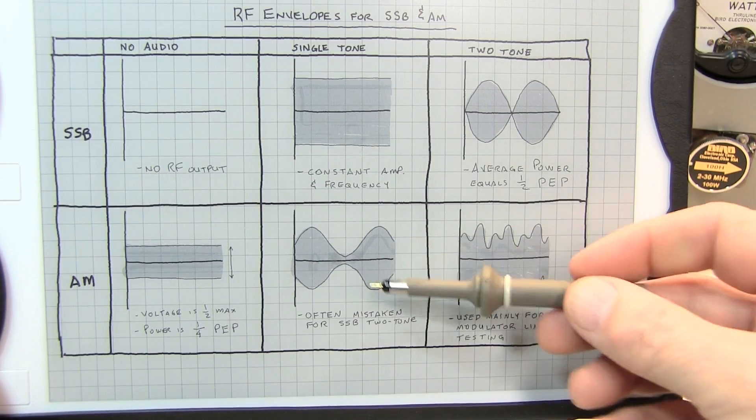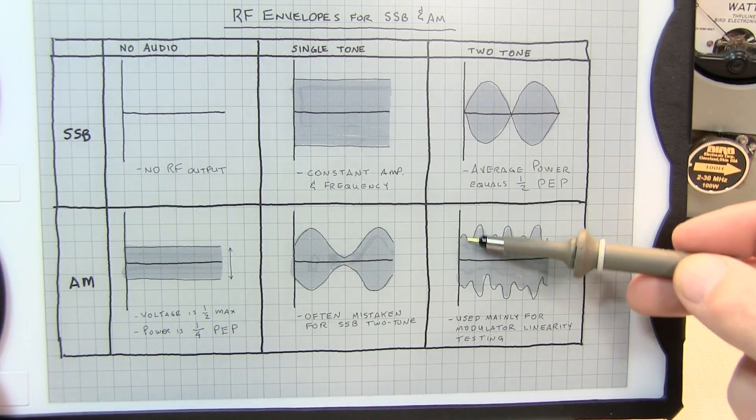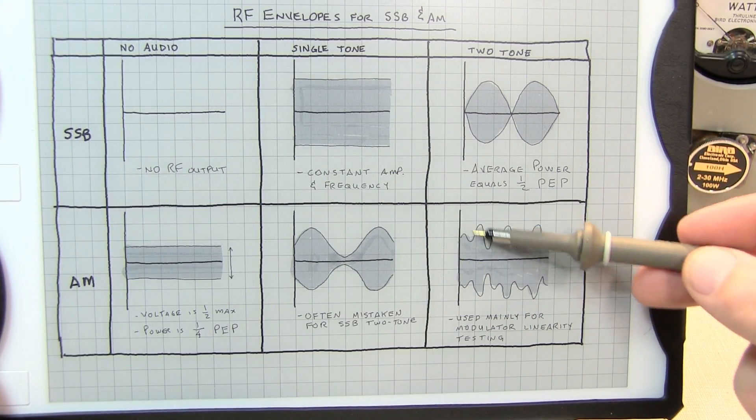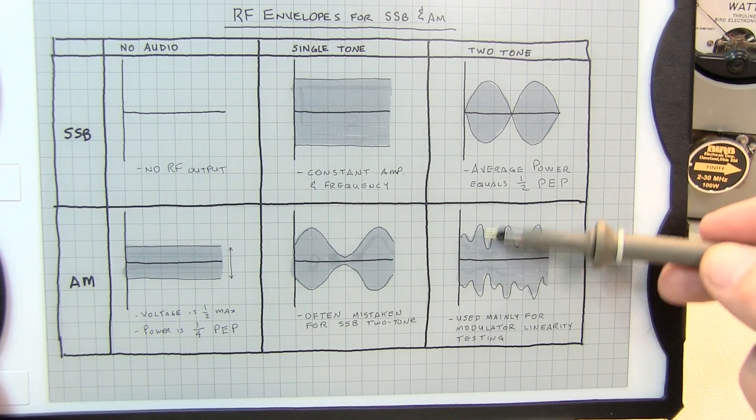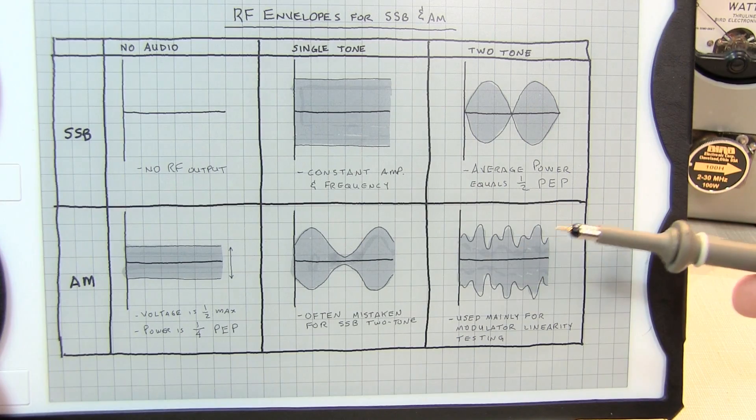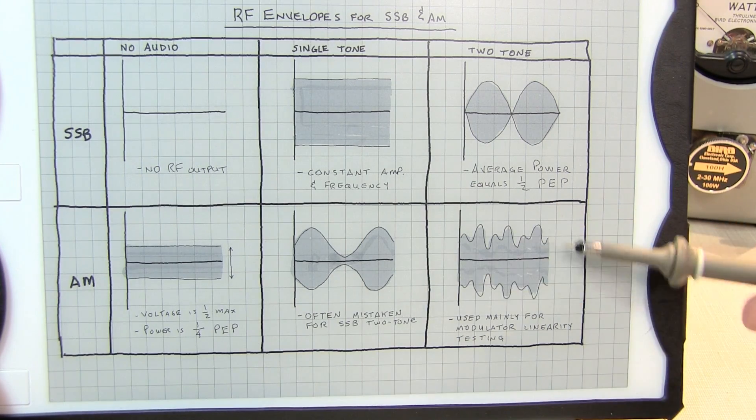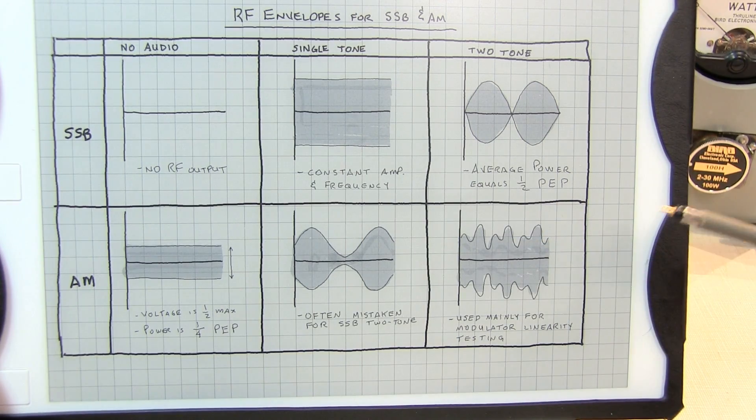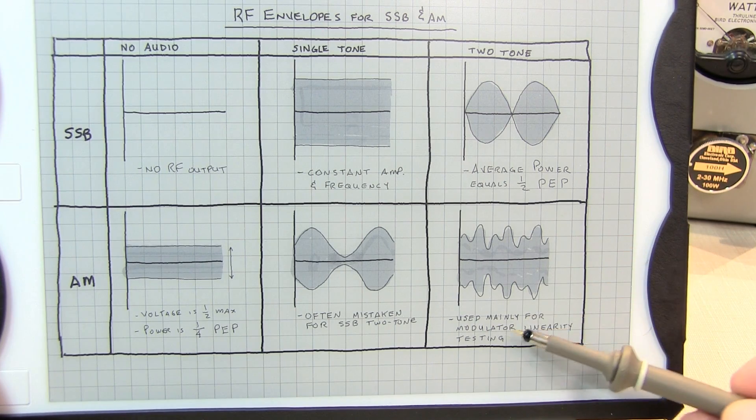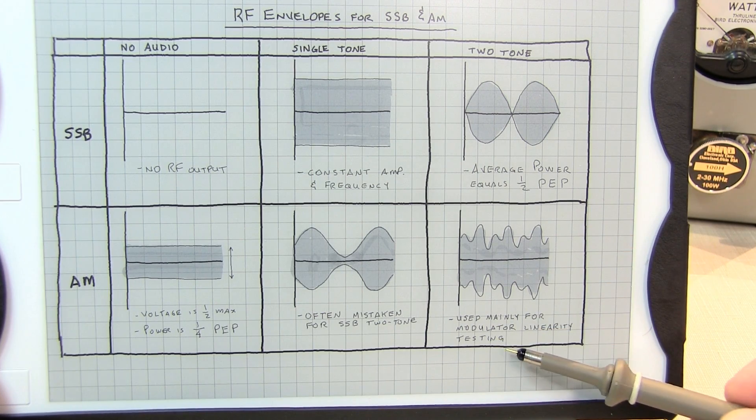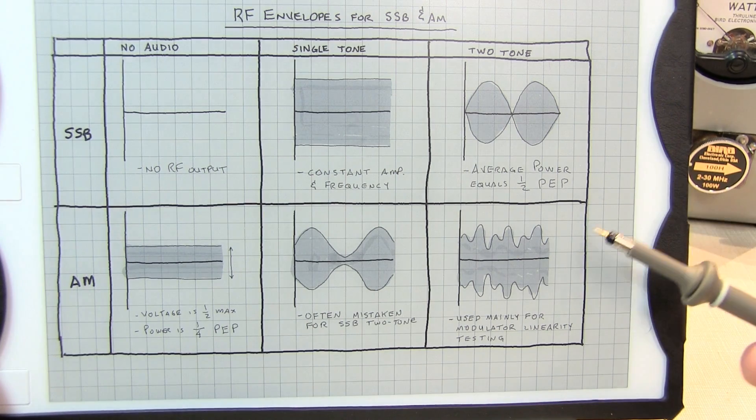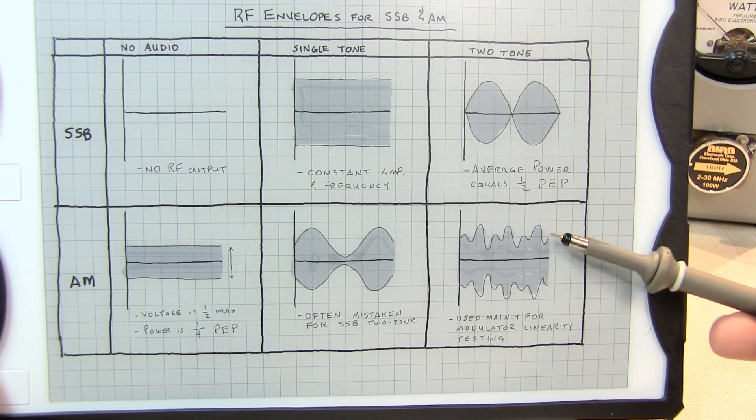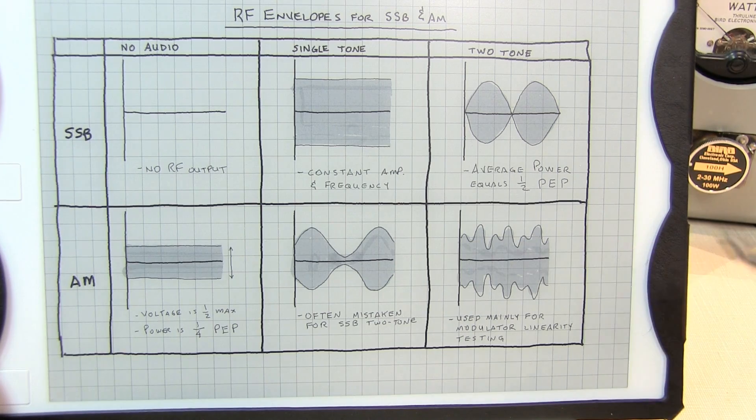Now the two-tone signal applied to an AM transmitter will create an RF envelope that essentially is the sum of those two tones, and the shape of that will vary depending on what two tones are picked. This is generally not used for measuring any kind of power measurements, but is often used to look at modulator linearity. Because you can take and demodulate this signal and look at the spectral properties of that to see if there are any third-order products that are generated due to non-linearities in the transmitter.